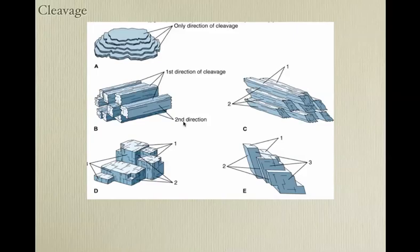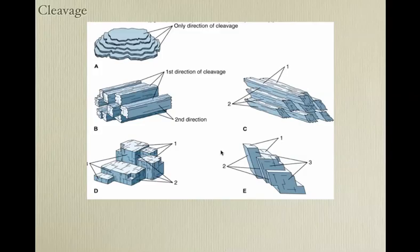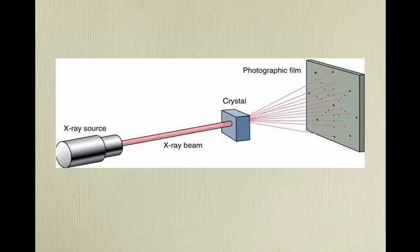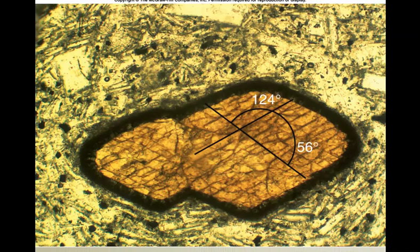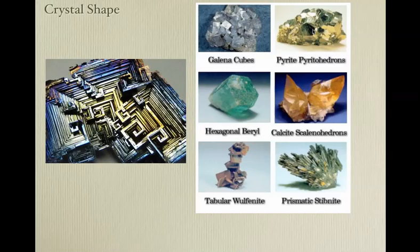Crystal shape — we can use cleavage to look at minerals. Some minerals cleave in one direction — they peel off in sheets. There are two directions of cleavage: in this case at right angles, in this case at acute or obtuse angles. Here are cubic three-directional cleavage, and here is triclinic three-directional cleavage. We can start looking at the crystal structure of minerals by using x-ray beams — we won't do that in class.